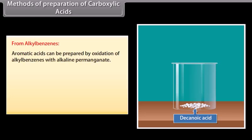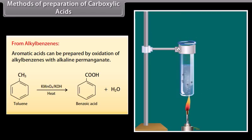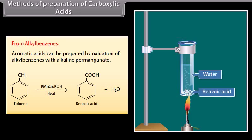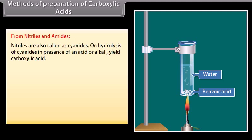From alkyl benzenes: aromatic acids can be prepared by oxidation of alkyl benzenes with alkaline permanganate. Toluene reacts with potassium permanganate in alkaline medium and forms benzoic acid with some water. From nitriles and amides: nitriles are also called cyanides. On hydrolysis of cyanides in the presence of an acid or alkali, they yield carboxylic acid.